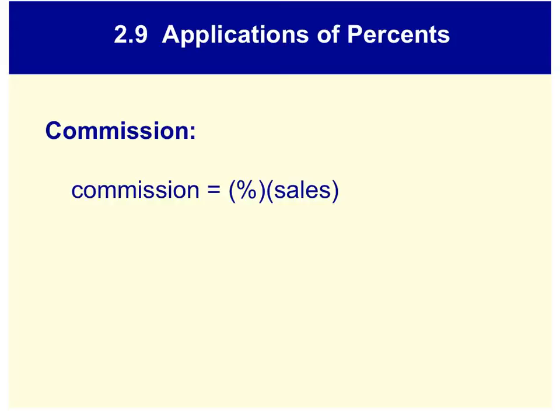First is commission. You might have a job where you can earn a commission. For example, in sales jobs, you might earn a certain percentage of your sales as extra money on top of your salary. Realtors also earn commission - that's the only way they make money. They get a percent of the sale, usually around 3.5% of the sale of their homes. To find commission, you take the percent (they'll give you the commission percent) - and note that this is as a decimal. So if the commission percent is 4%, we turn it into 0.04. Then you multiply it by the sales. A commission problem gives you the commission percent and the sales value, and you multiply them together.